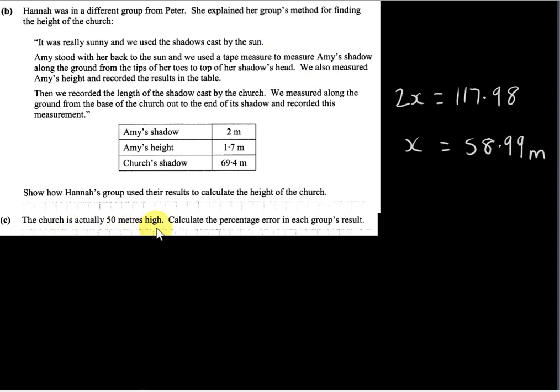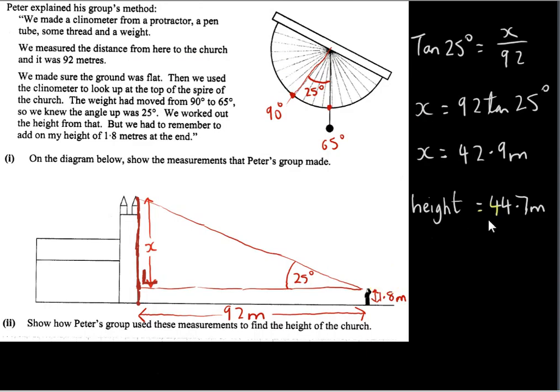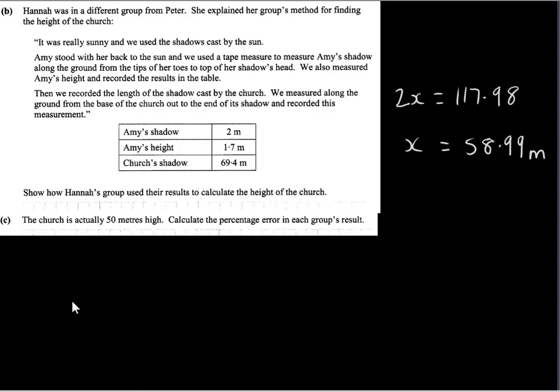The church is actually 50 meters high. Calculate the percentage error in each group's results. So I'll go back to the first result that we got for the height, 44.7 meters. So to get the error for the first result, we get the difference between the true value for the height and the measured value, which is 44.7. To get the percentage error, we divide the error by the true value. So if we compare the error to the true value, this will give the error as a fraction of the true value. And to turn this fraction into a percentage, we multiply by 100.